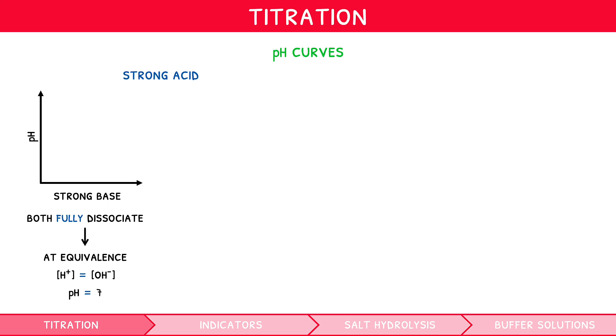Using the example of HCl plus NaOH, our graph would start close to 1, as HCl is a strong acid, and finish at 13, as NaOH is a strong base. Between these points, a sigmoidal shape is created. The equivalence point of pH 7 is located at the middle of the steep section.